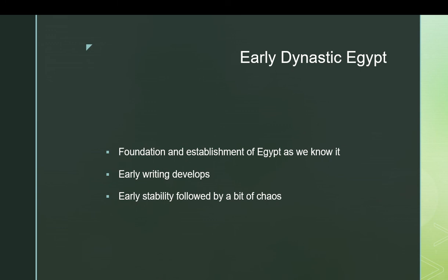The Early Dynastic period is divided into two dynasties. The First Dynasty was a group of kings who ruled over a pretty stable and functional kingdom. The Second Dynasty seems to have coincided with some environmental upheaval and other issues, and it was a little chaotic. We don't know a lot because this is when writing was developing, but before kings were really making lots of records of what they were doing. The monuments were not quite so large or impressive as in later periods and did not survive so well.